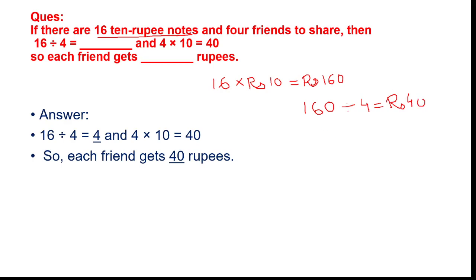Let's review again. If there are sixteen ten-rupee notes and four friends to share, then sixteen divided by four equals four. And four into ten equals forty. So each friend gets forty rupees, as written in the answer.